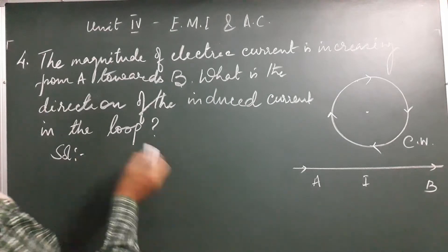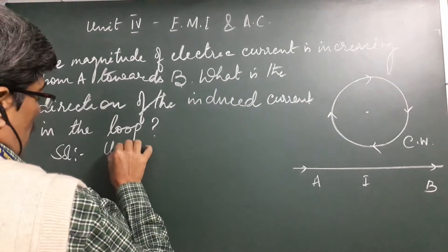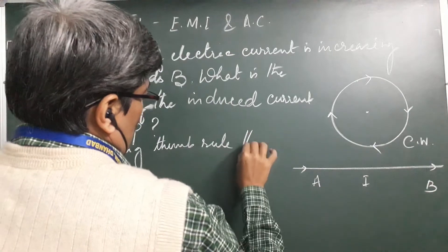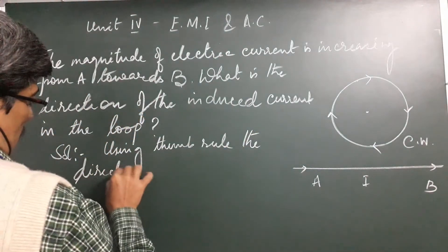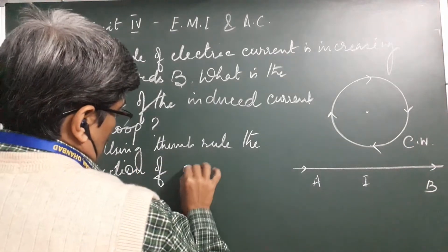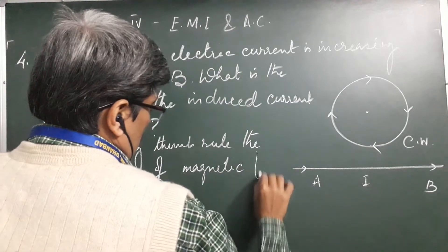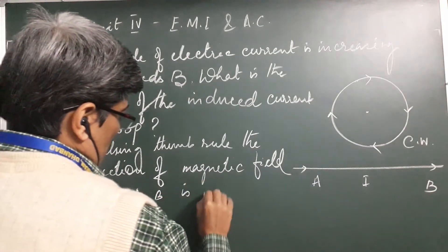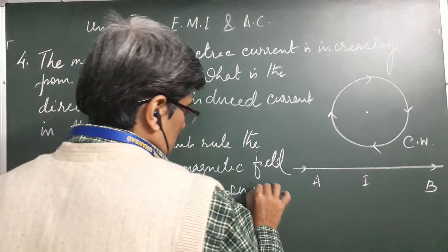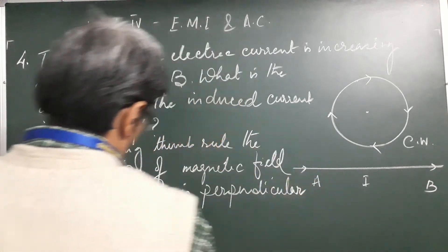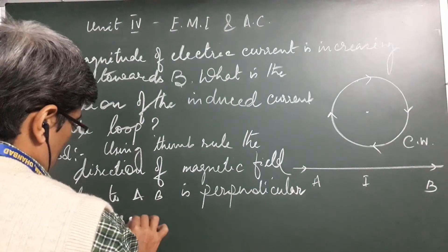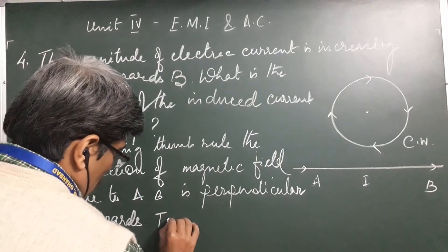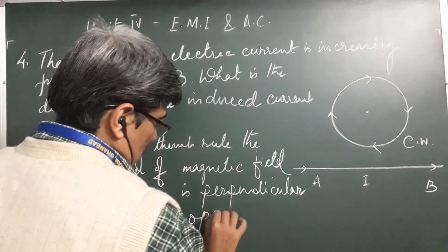So the current flows in the clockwise sense. Using the thumb rule, the direction of the magnetic field due to AB is perpendicular outward. To oppose this, the induced current should be in the clockwise sense.